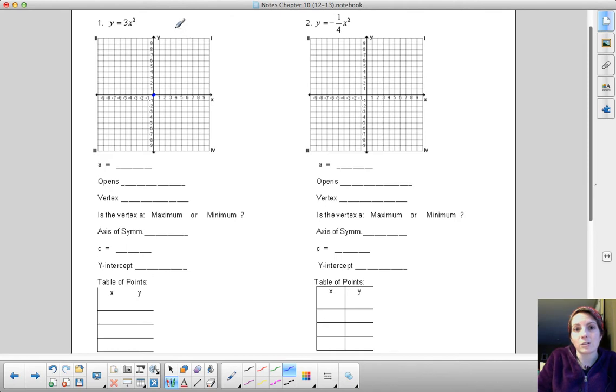When we do that, remember A controls how the graph opens, so whether it opens up or down. And it's also going to control whether the graph has been stretched or shrunk, so wider or skinnier. Everything else about this graph will stay the same.